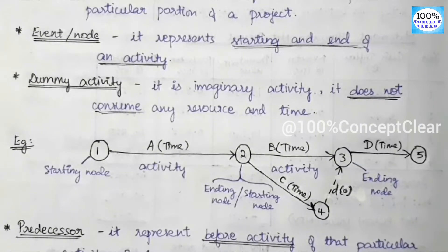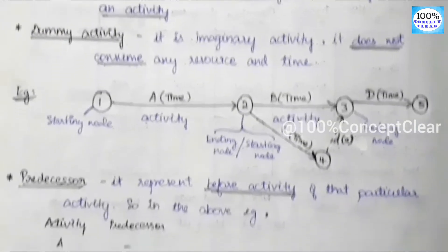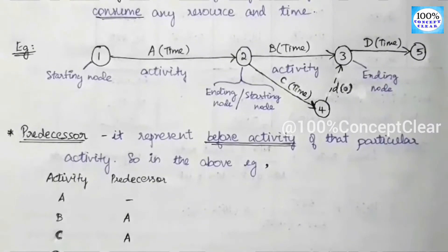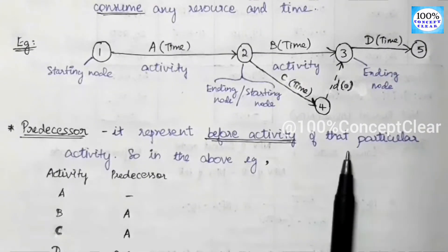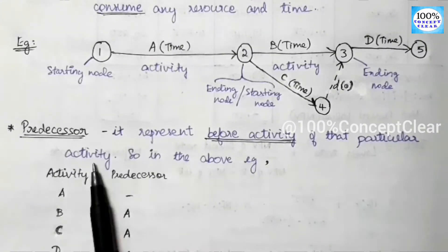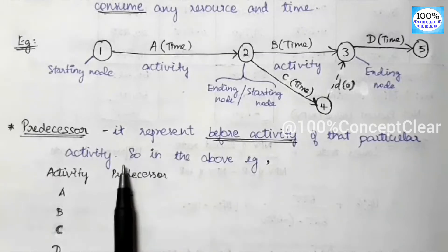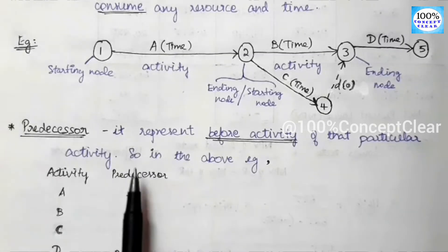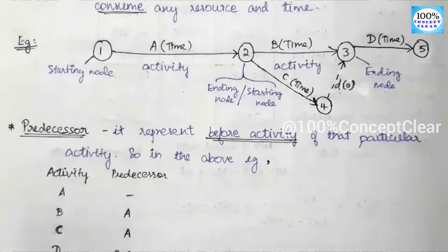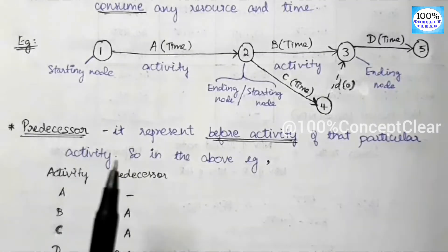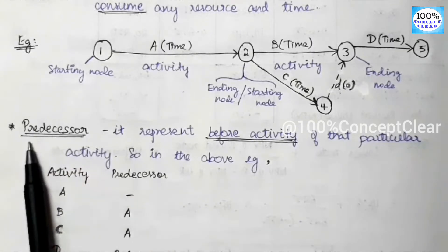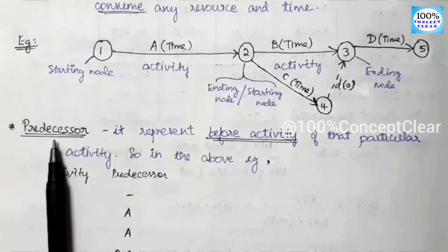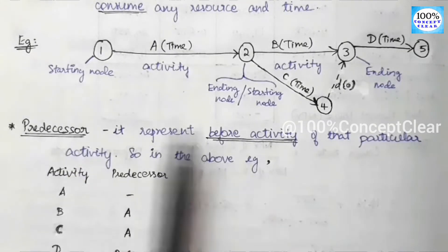The next component is predecessor. A predecessor represents the activity that comes before a particular activity. We say the predecessor is the previous activity — it is the before activity.